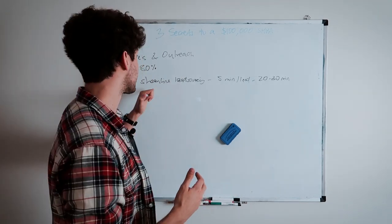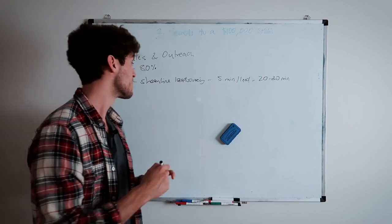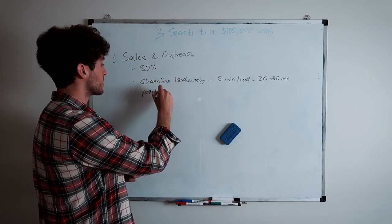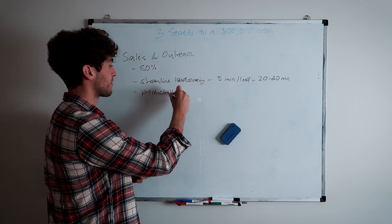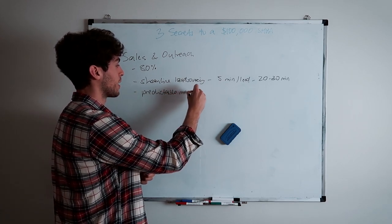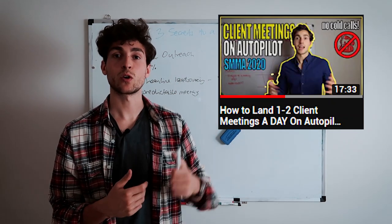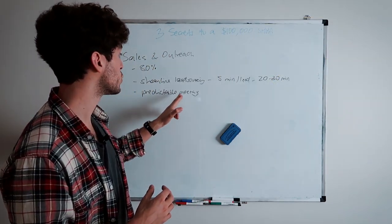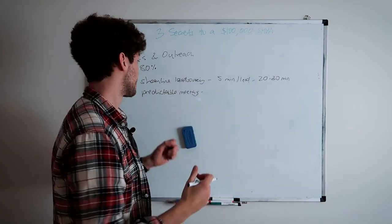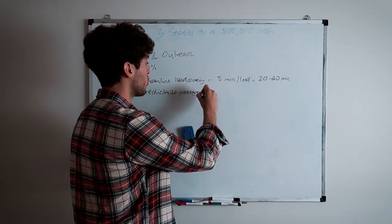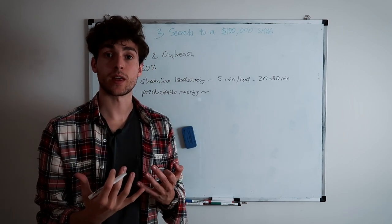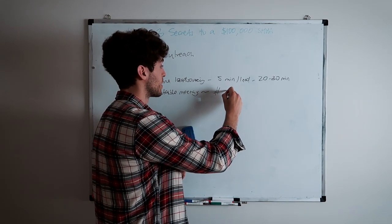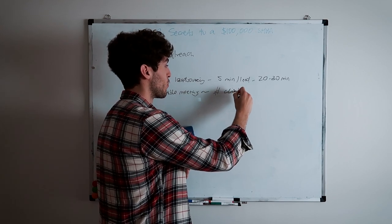The second thing you want to keep in mind when it comes to sales and outreach is you have to have a system to make sure you predictably land meetings. And I've got a bunch of videos on this topic. You guys can check out this video right after this one. But the main thing here is you need to make sure you have a predictable system to land meetings. And the reason why that is, is because predictable meetings is directly correlated. And the number of meetings that you land on a daily basis is directly correlated to the number of clients you sign. The more meetings, the more clients you're going to sign.